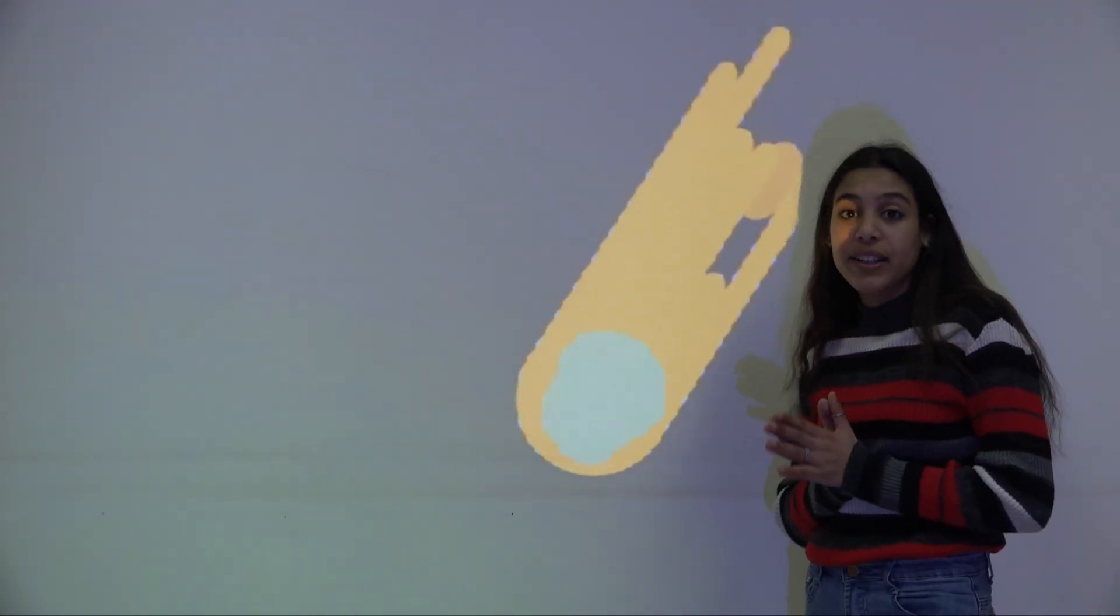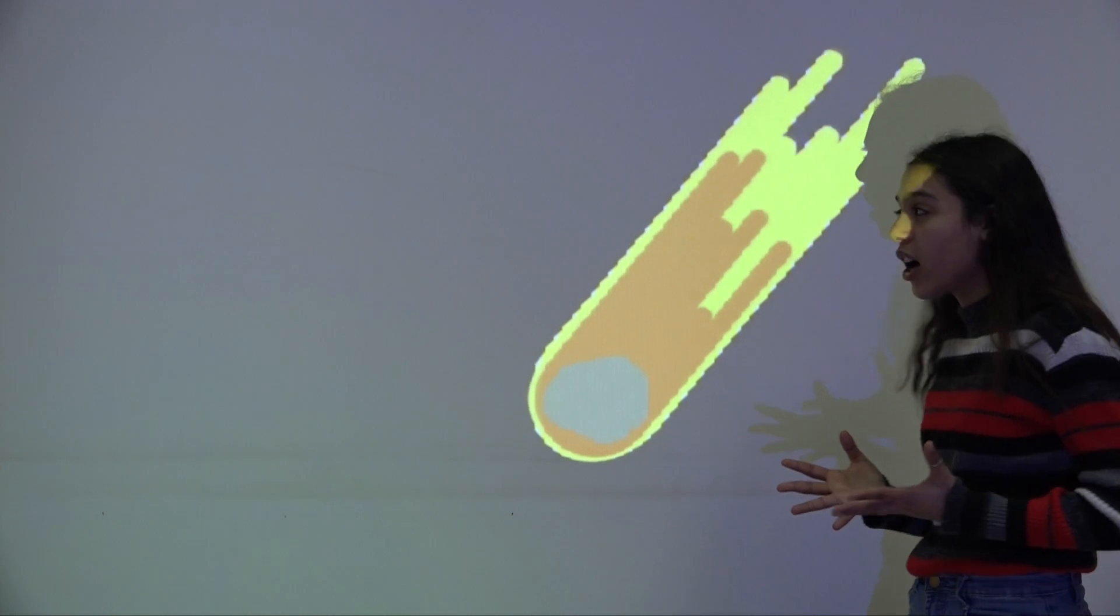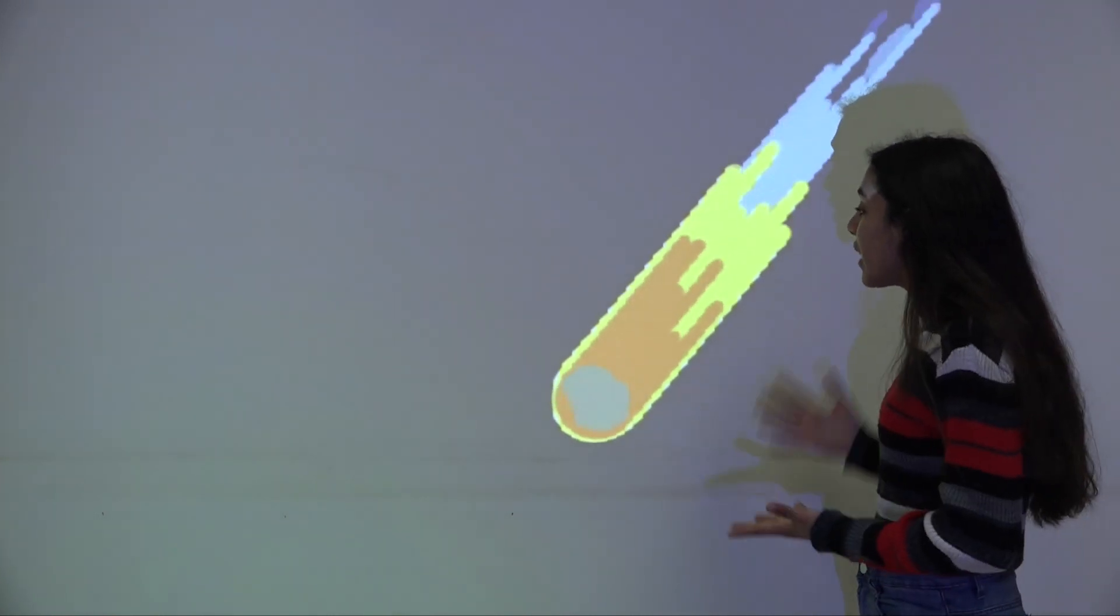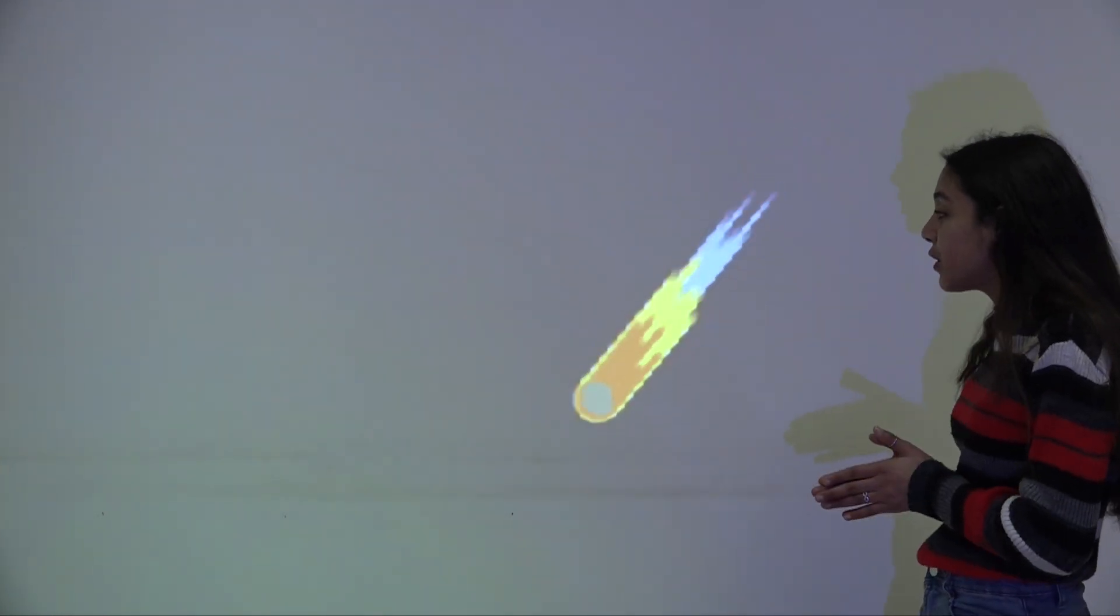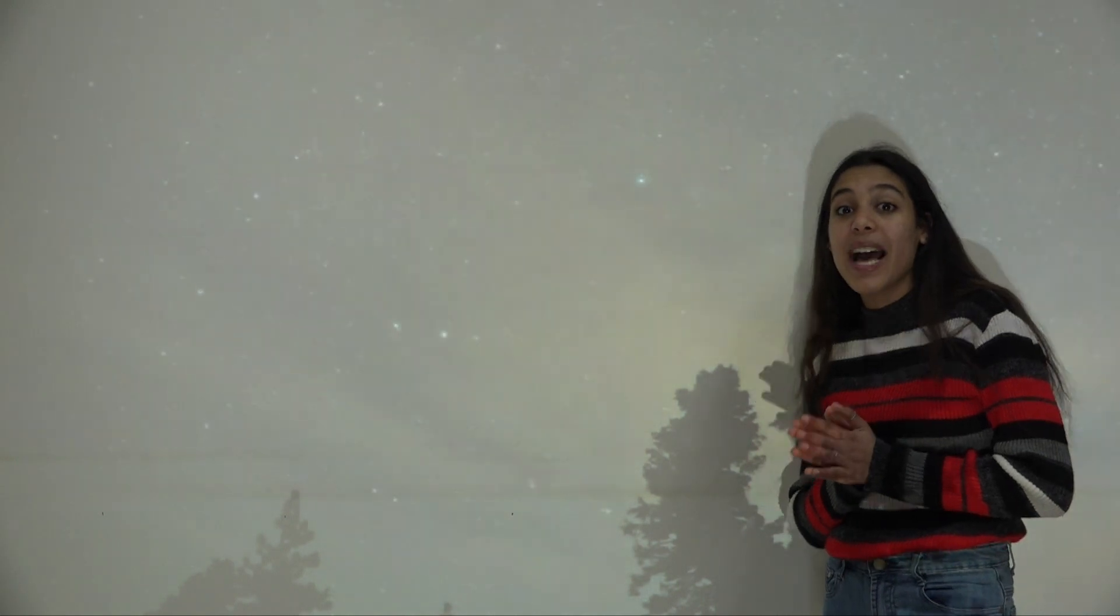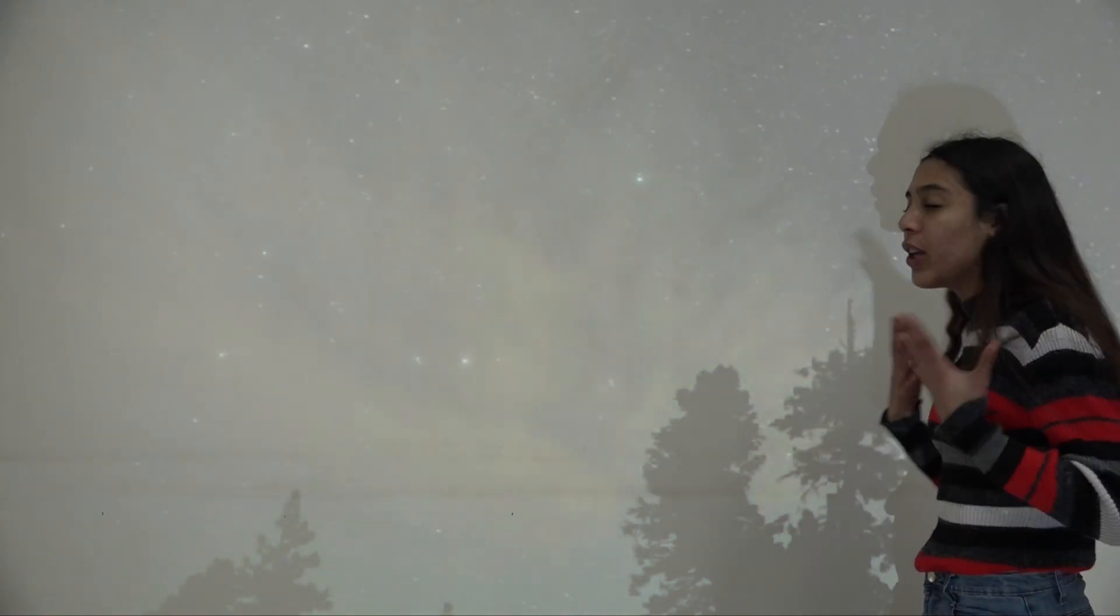As the meteoroids fall toward Earth, they produce friction as they move through the atmosphere. This causes the meteoroids to heat up and create the streak of light we see, which is the glow emitted by the burning rock. When Earth encounters many meteoroids at once, we call it a meteor shower.